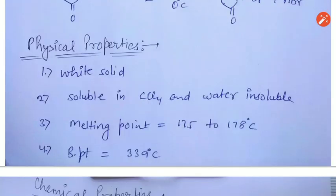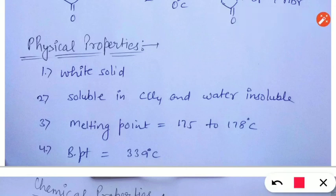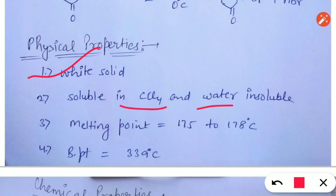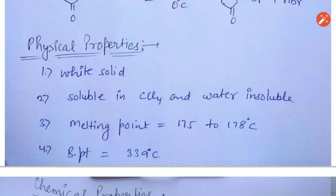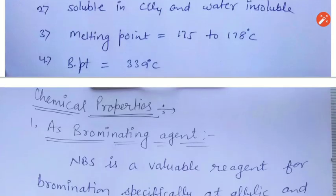Now we will study the physical properties of N-Bromosuccinimide. N-Bromosuccinimide is a white solid, soluble in carbon tetrachloride and insoluble in water. Its melting point ranges from 175 to 178 degrees Celsius and its boiling point is 339 degrees Celsius.